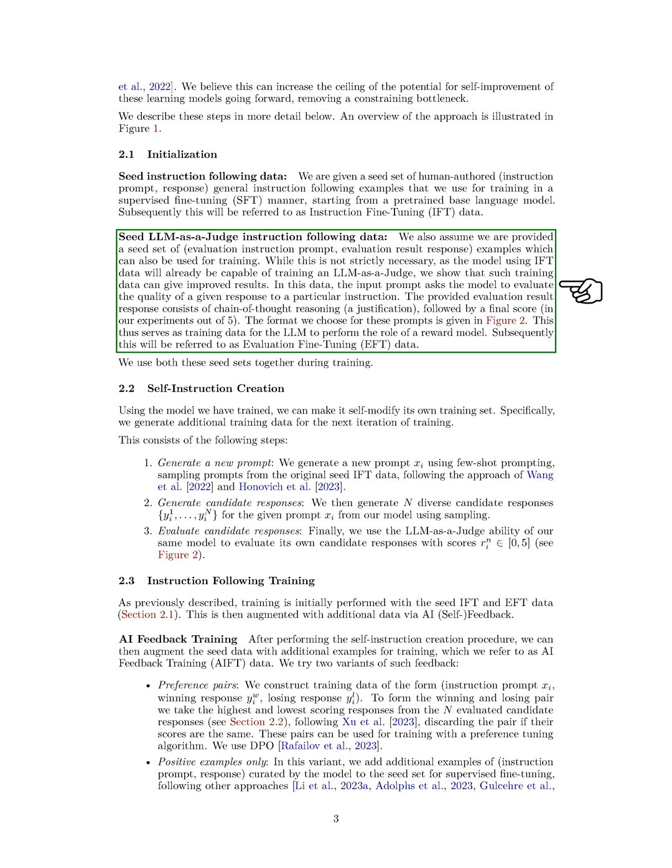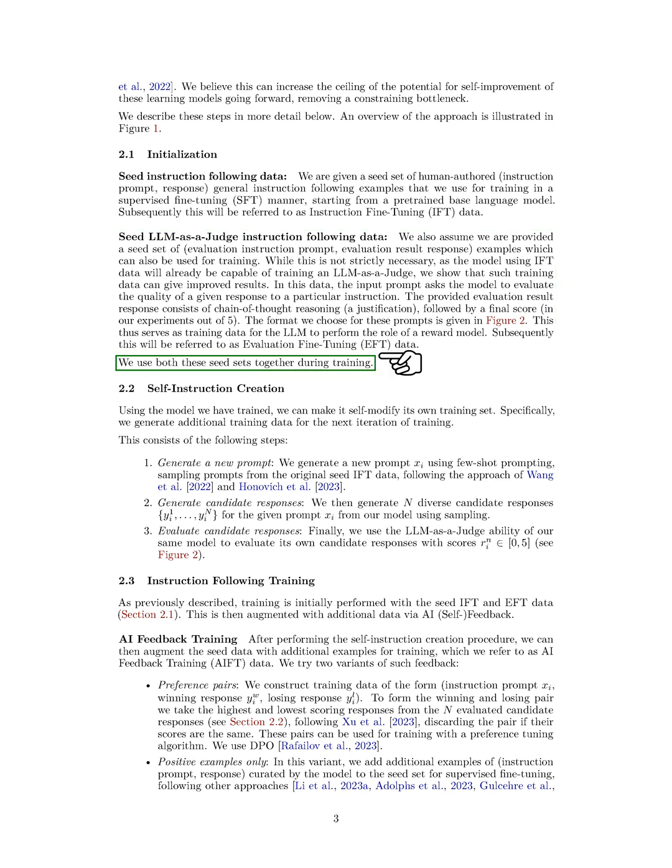We start with a set of initial data, which we call instruction fine-tuning, IFT, data. This data consists of general instruction examples created by humans. We use these examples to train our model in a supervised manner, starting from a pre-existing language model. We also have another set of data, which we call evaluation fine-tuning, EFT, data. This data includes examples of evaluation prompts and their corresponding results. Although it's not strictly necessary, we've found that using this data can improve our model's performance. In this data, the model is asked to evaluate the quality of a response to a given instruction. The evaluation includes a justification and a final score, out of five in our experiments. This data helps train our model to act as a reward model. Once we've trained our model using both the IFT and EFT data, we can then use it to modify its own training set.